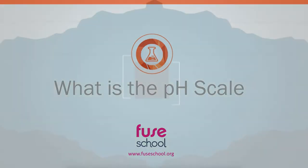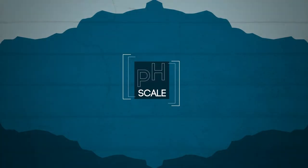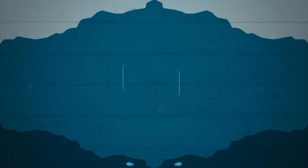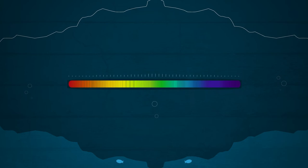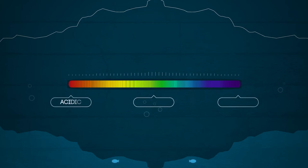In this video we are going to have a look at the pH scale and some other simple indicators of acids and alkalis. In other videos we have seen what makes something acidic, neutral or alkaline. We can tell if something is acidic, alkaline or neutral by using an indicator.